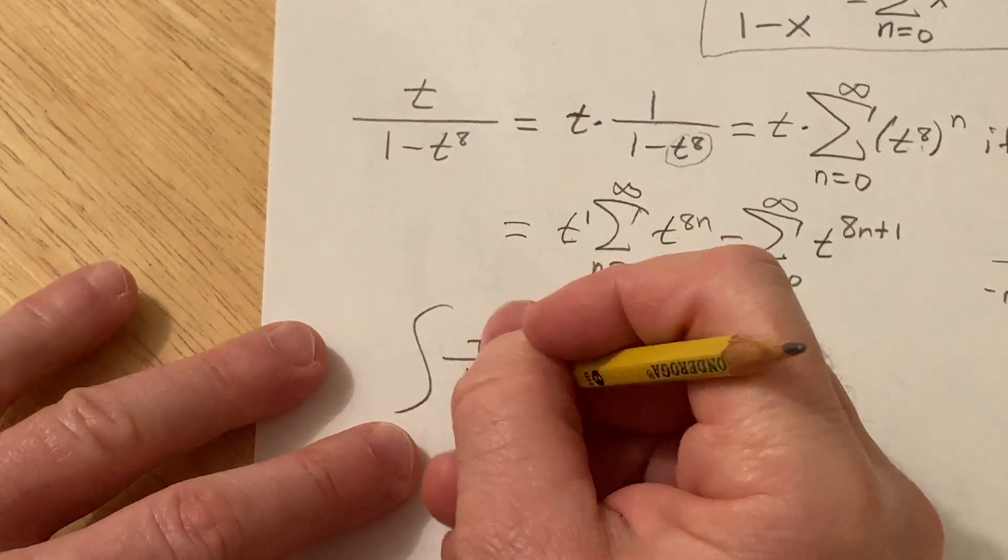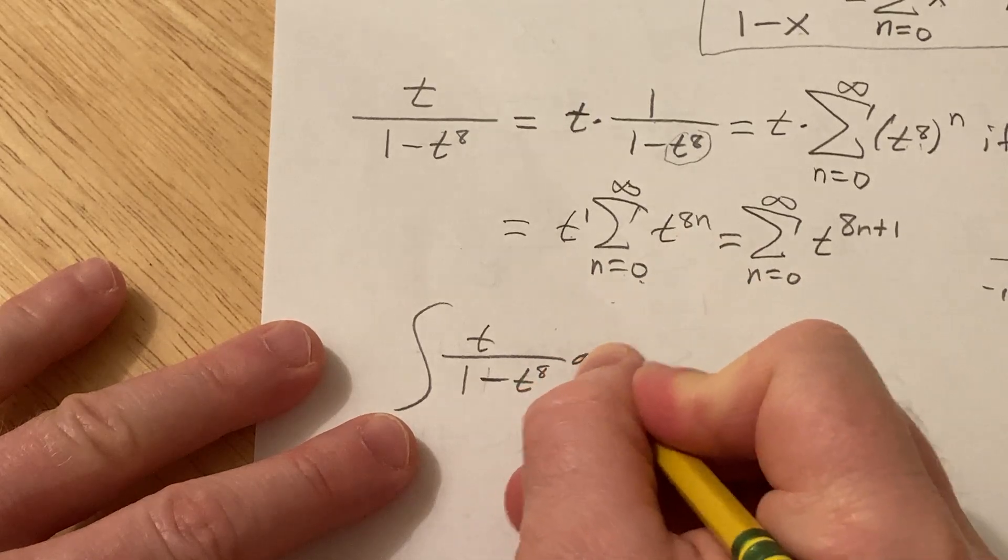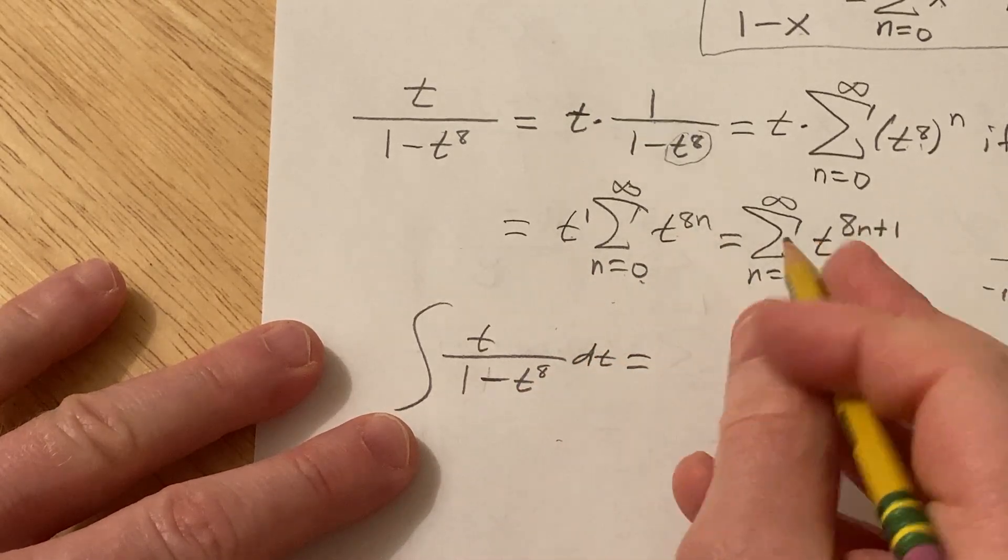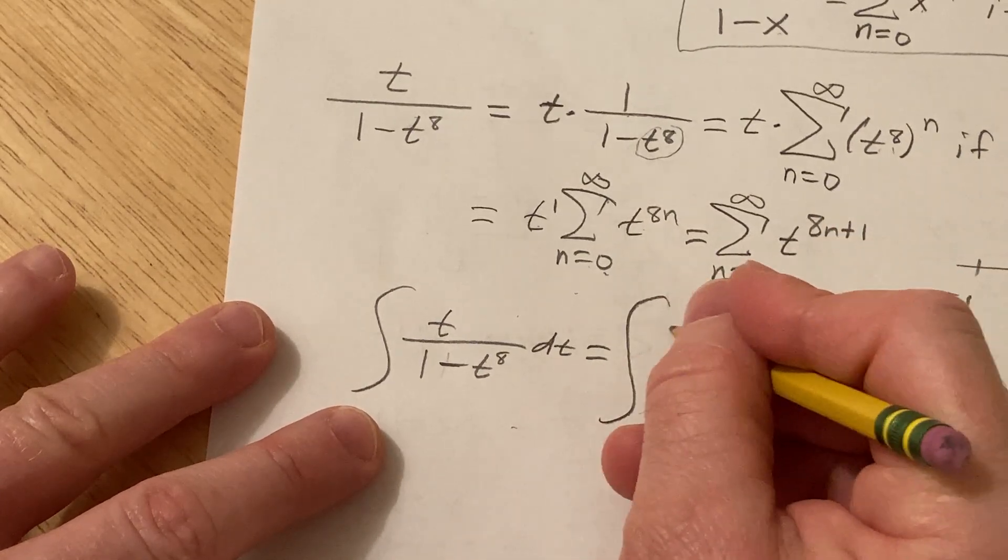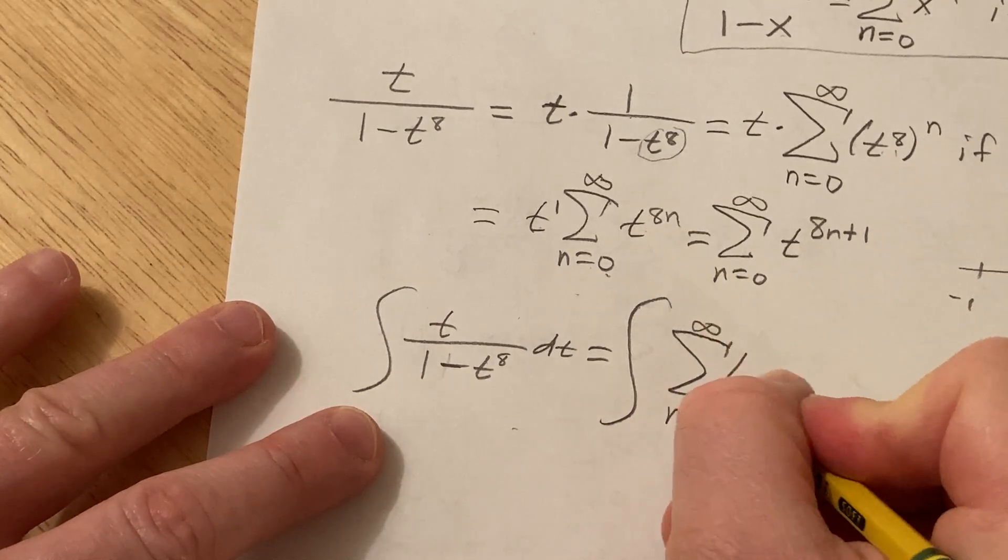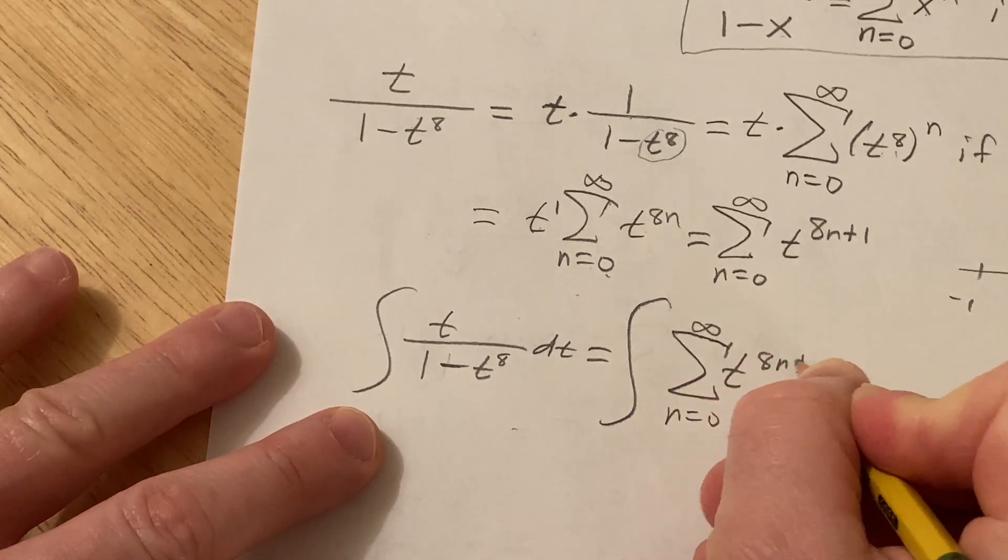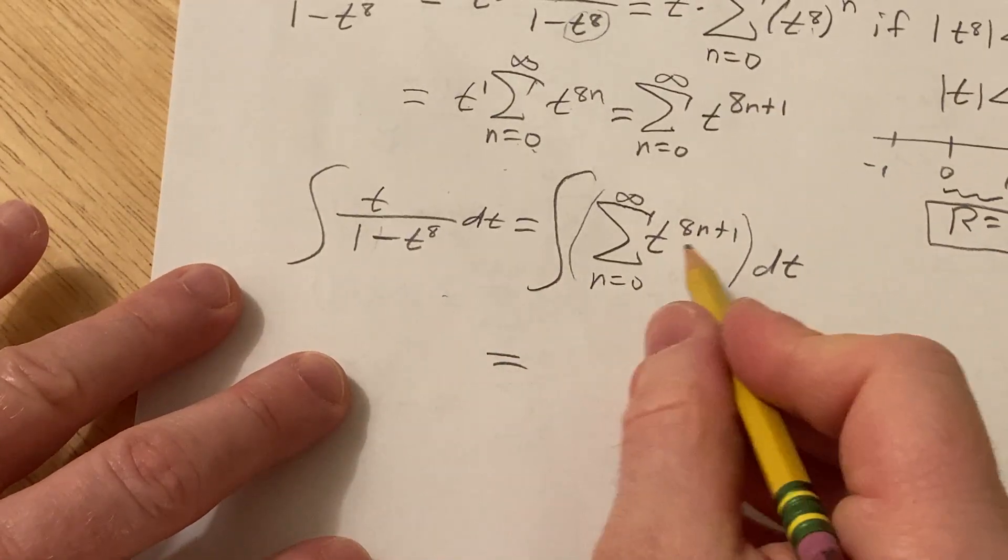So now we're going to integrate. I'll write it just to look cool, I'll put the integral outside the sum because it looks cool, like this: the integral of the sum from n equals zero to infinity of t to the eight n plus one dt.